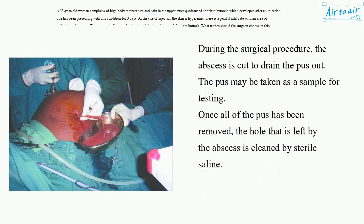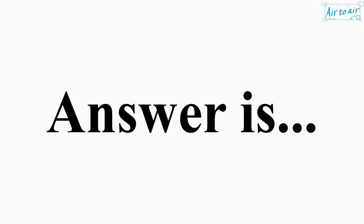During the surgical procedure, the abscess is cut to drain the pus out. The pus may be taken as a sample for testing. Once all of the pus has been removed, the hole that is left by the abscess is cleaned by sterile saline. The answer is C: Abscess incision, sanation and drainage of the cavity.